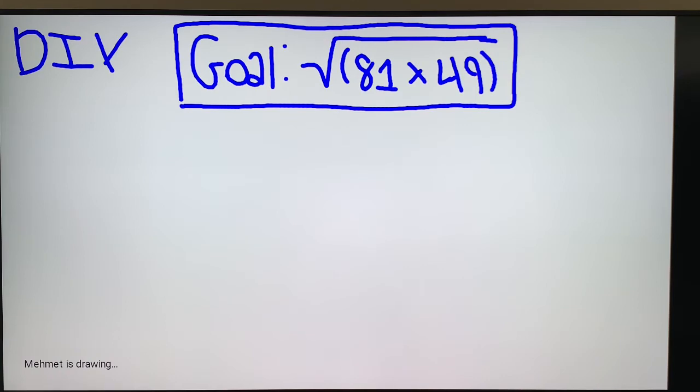So here's a DIY for you guys, do it yourself. The goal is root, print parentheses, (81 times 49). See if you can use the perfect square tricks we were doing to solve this one.